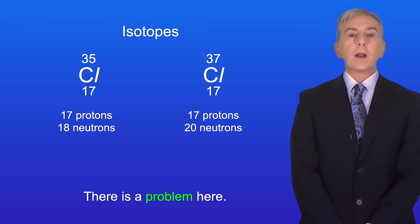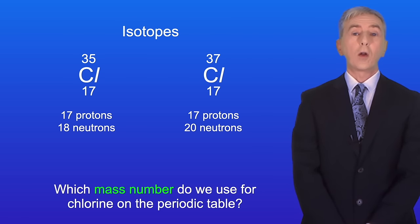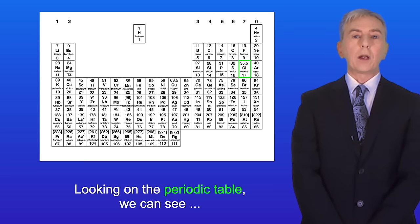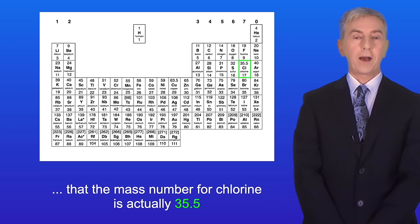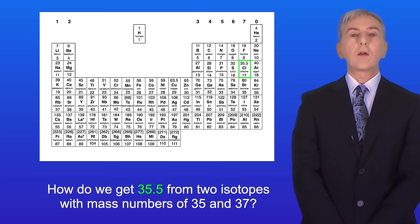Now there is a problem here. Which mass number do we use for chlorine on the periodic table? Looking on the periodic table we can see that the mass number for chlorine is actually 35.5. So how do we get 35.5 from two isotopes with mass numbers of 35 and 37?